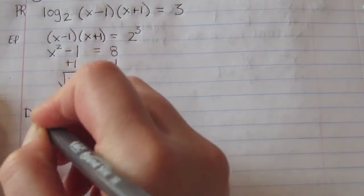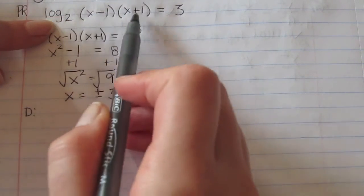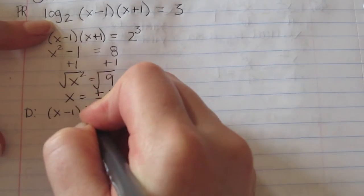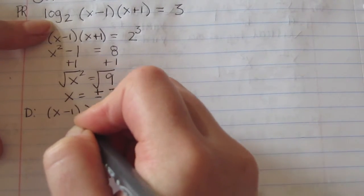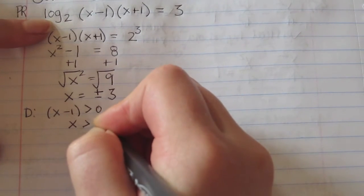The domain is taken from x minus 1 and x plus 1. The domain of x minus 1 is greater than 0, so x is going to be greater than 1.